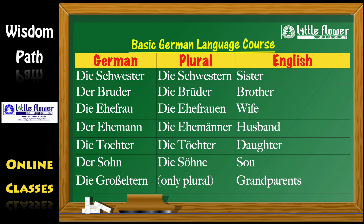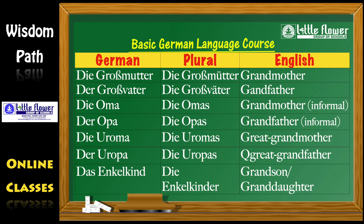der Bruder, die Brüder. die Ehefrau, die Ehefrauen. der Ehemann, die Ehemänner. die Tochter, die Töchter. der Sohn, die Söhne. die Großeltern. die Großmutter, die Großmütter. der Großvater, die Großväter. die Oma, die Omas. der Opa, die Opas.